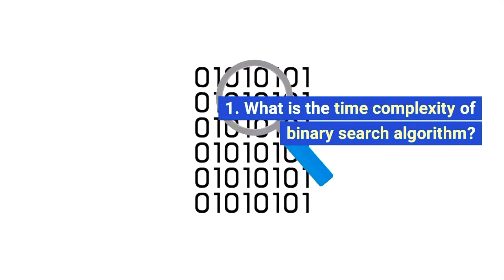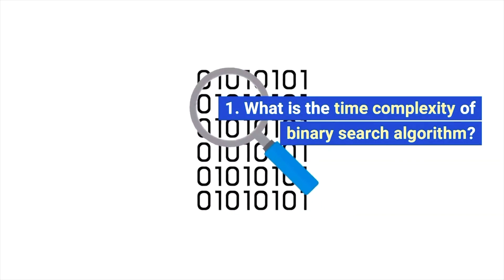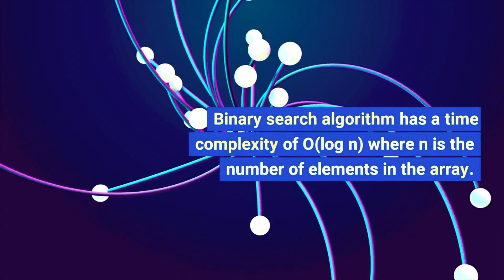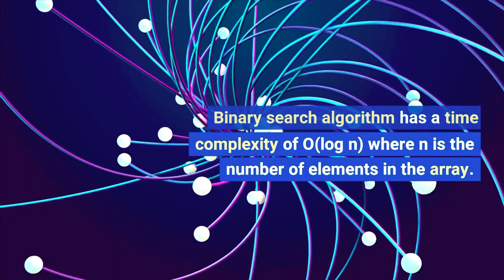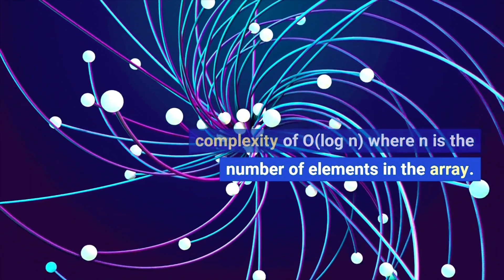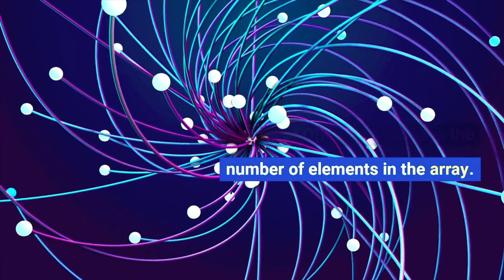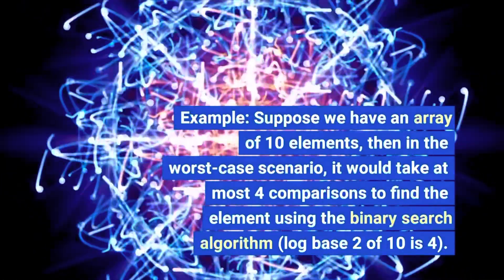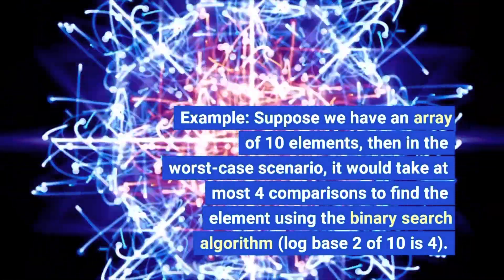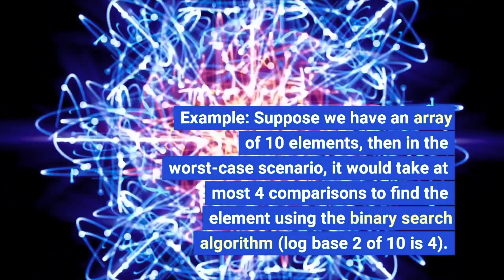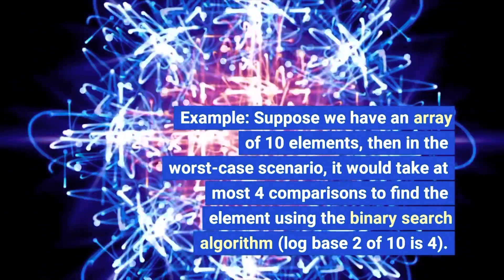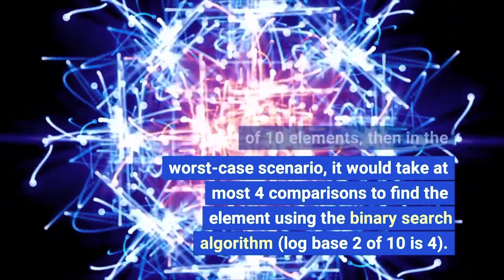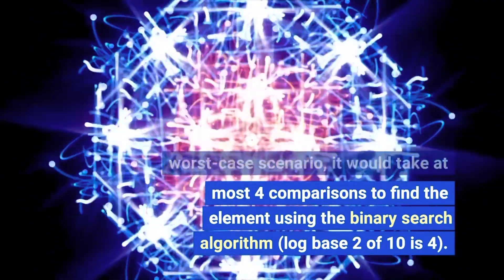Our very first question is: what is the time complexity of binary search algorithm? The binary search algorithm has a time complexity of O(log N), where N is the number of elements in the array. For example, if we have an array of 10 elements, in the worst case scenario it would take at most 4 comparisons to find the element, since log base 2 of 10 is 4.